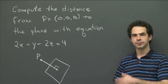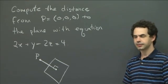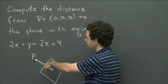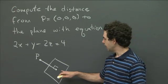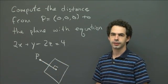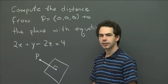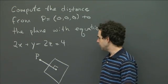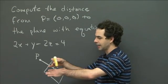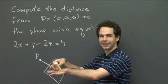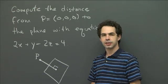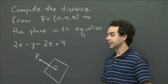So hopefully you had some luck working out this problem. Let's think about it a little bit. We have a point, and we have a plane, and we want to figure out what the perpendicular distance from the point to the plane is. So one thing that's going to be important is definitely knowing what direction that vector is. We have the plane, and we want to find a perpendicular segment to it, so it's useful to know what direction that segment is pointing in.